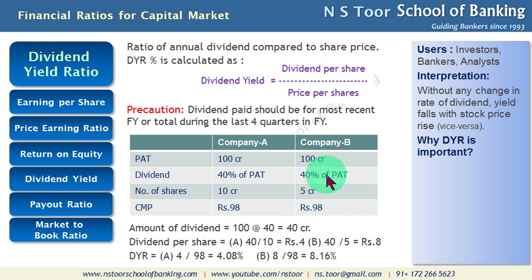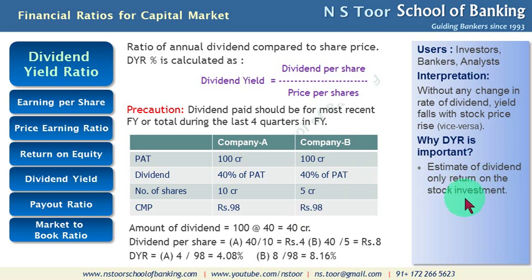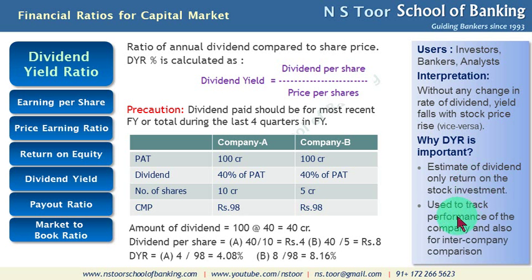Why is this ratio important? It is an estimate of dividend-only return on the stock investment — whatever amount has been invested in the stock, it gives an estimate of dividend-only return. Return can be in the form of capital appreciation or in the form of dividend, and this ratio indicates the return in terms of dividend only relative to the stock price. It can also be used to track the performance of the company and for inter-company comparison.